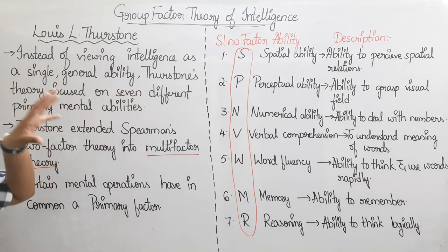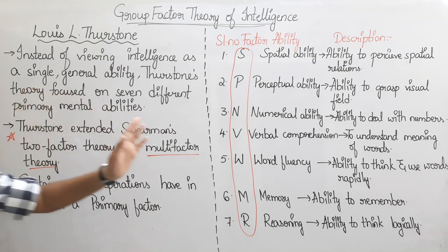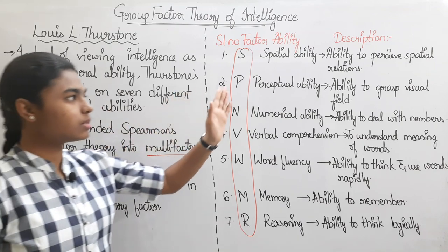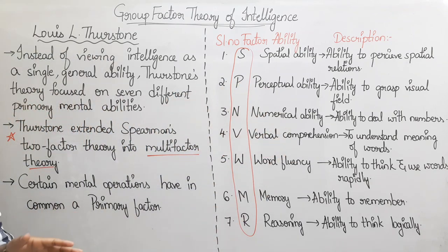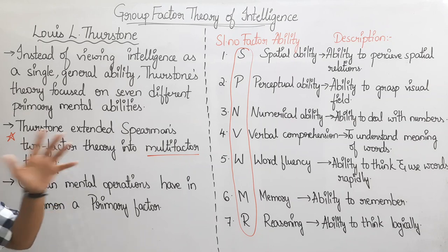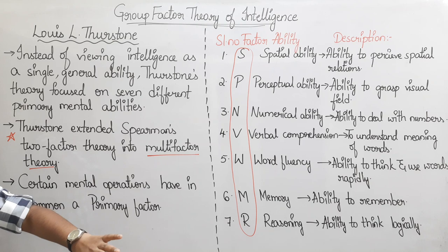The first one is Spatial Ability — the ability to perceive and pursue spatial relations.